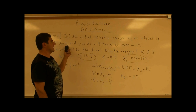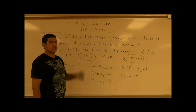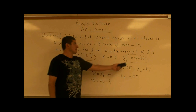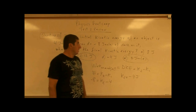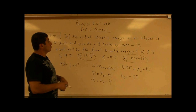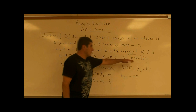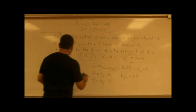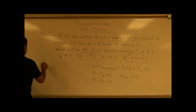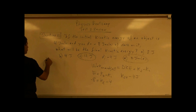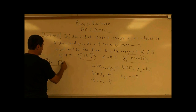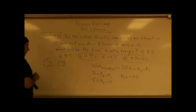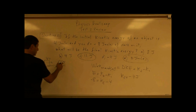If something has four joules of kinetic energy and you do negative eight joules of work on it, that pretty much means you've stopped it — zero joules. It had four joules of energy and you stopped it, so the final energy is zero joules.